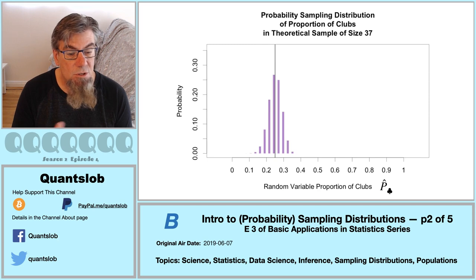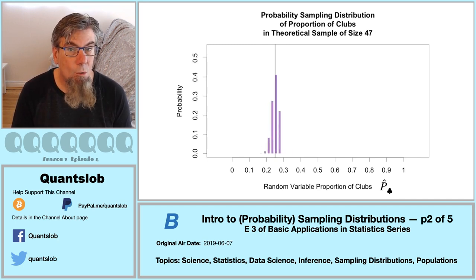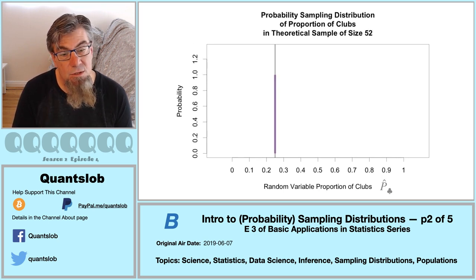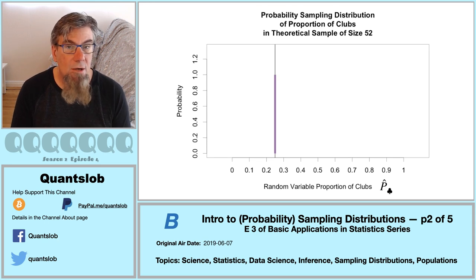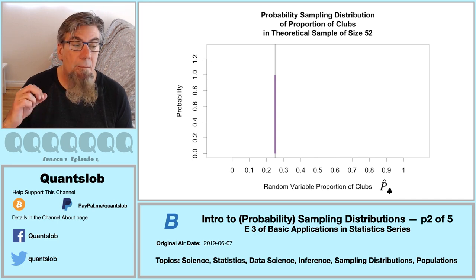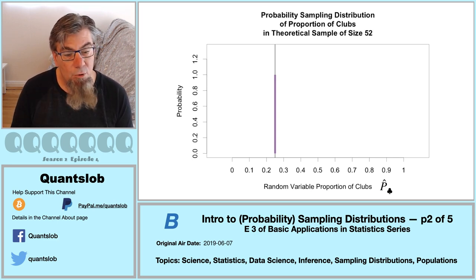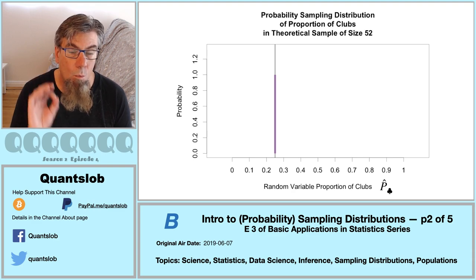Here's the probability sampling distribution of a sample proportion of clubs for sample sizes three, four, five, and beyond — shown in animation as we increase our sample size. The distribution seems to be centered at one-fourth, the population proportion. It has a sort of bell shape, and gets narrower and narrower as the sample size increases. Once we've sampled the entire population — all 52 cards — the probability that the ratio of clubs will be one-fourth must be probability one. When we sample the entire population, the random variable sample proportion equals the population proportion with probability one.